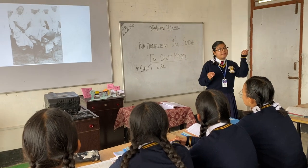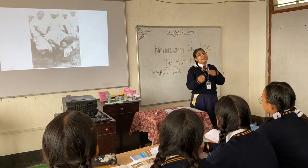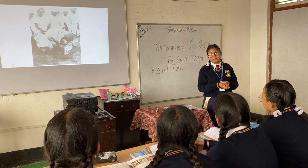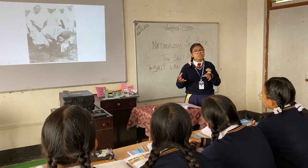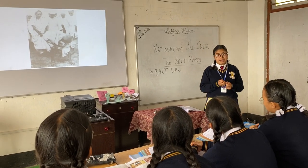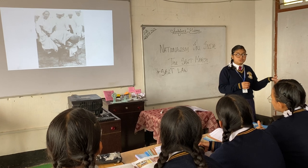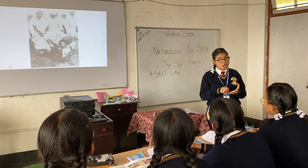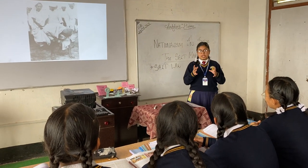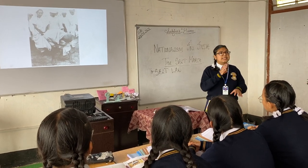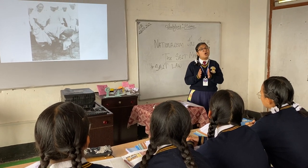After reaching Dandi, Mahatma Gandhi went to the coastal site and picked up a handful of salt. He said, 'With this, I am shaking the foundation of the British Empire.' He then ceremonially violated the salt law. The salt law said that Indians were not supposed to manufacture salt — it was prohibited. But he manufactured the salt, thus disobeying the government. This entire process — the salt march and the manufacturing of salt — marked the beginning of the civil disobedience movement.